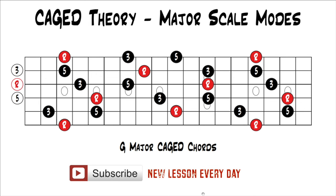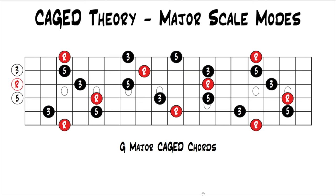In the last lesson, we looked at how the major CAGED chords work with the major scale — something many teachers will teach: the five-pattern major scale with the CAGED system. That's useful, but the problem is it only deals with major chords. That's very limiting, because very few songs are just written with major chords. Most songs have minor chords as well. So in this lesson, we're going to look at how all the CAGED chords — major and minor — can work in major scale harmony using the major scale modes.